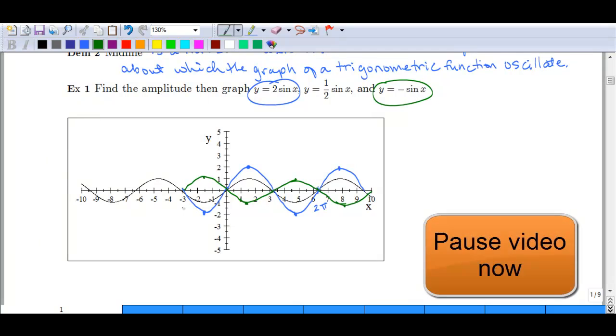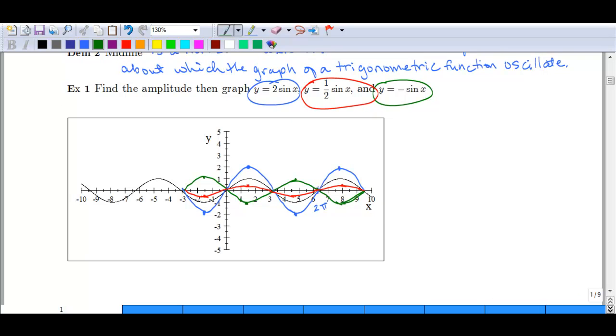So I want you to pause the video here and try to work out y equals 1 half sine of x. And then resume the video to make sure you've done it correctly. So what you should have ended up with is this red curve here. It's slightly flattened out compared to the original curve. And again, we had an amplitude of 1 half. So we can always tell our amplitude here from our function, just looking at the graph, seeing how high that crest or sag is from the midline.